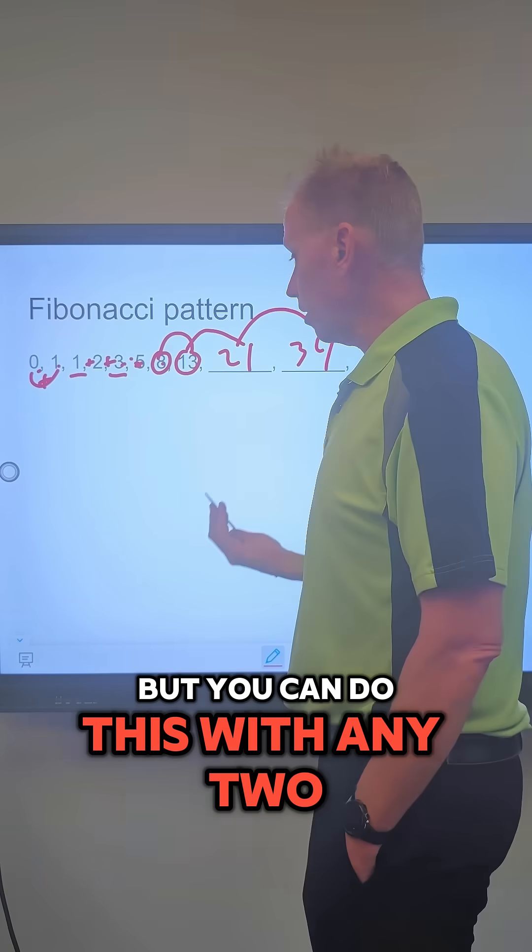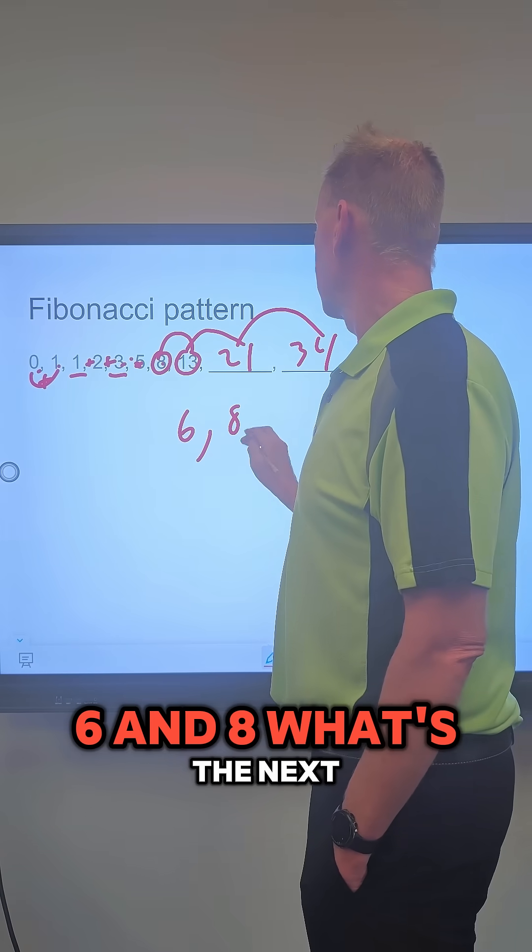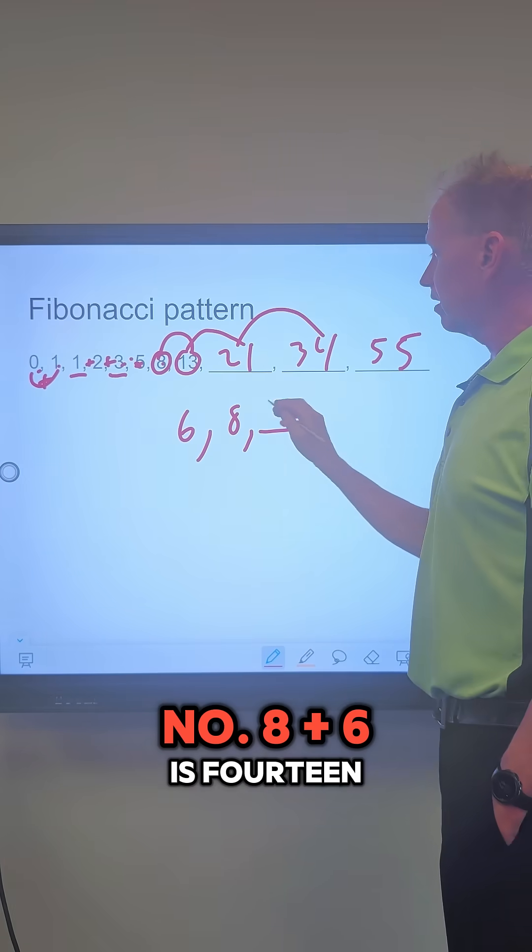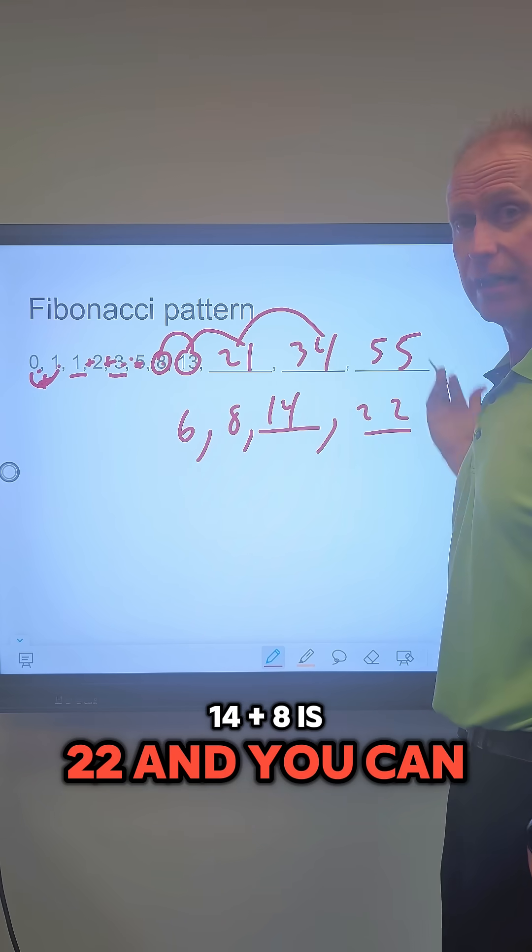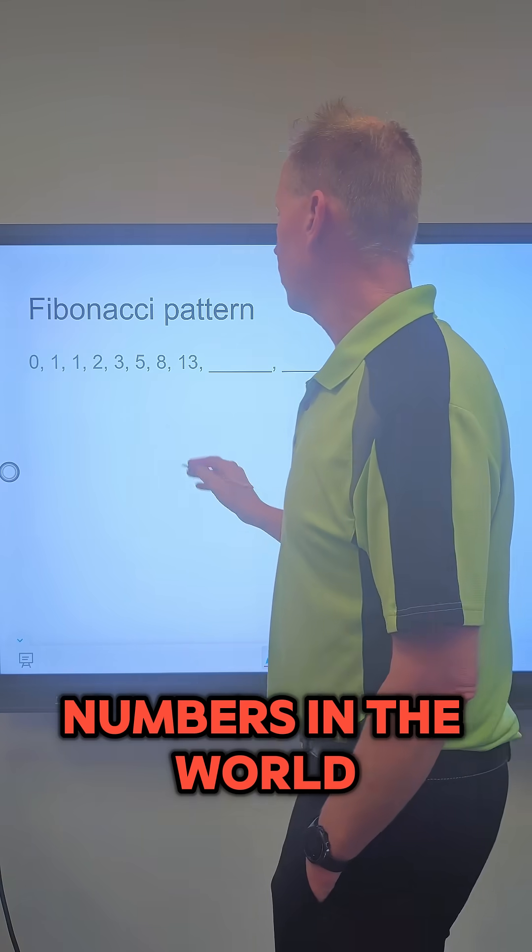You can do this with any two numbers. Let's pick 6 and 8. What's the next number? 8 plus 6 is 14, 14 plus 8 is 22. You can keep going. You can do this for any two numbers in the world.